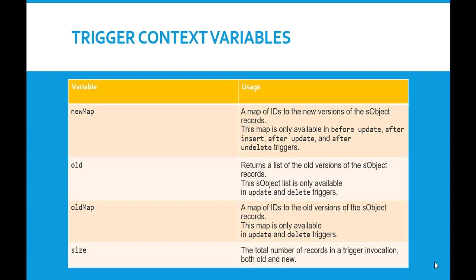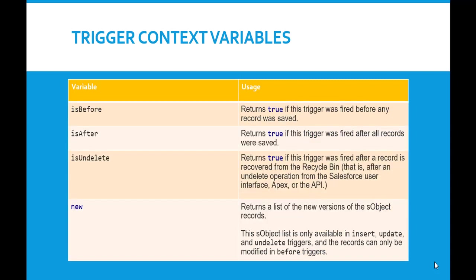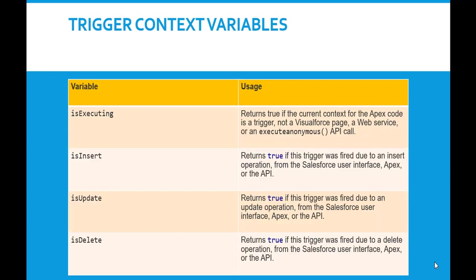To summarize, the trigger context variables are: new, newMap, old, oldMap, size, isBefore, isAfter, isUndelete, isExecuting, isInsert, isUpdate, and isDelete. These are the different context variables available, along with their usage. In the next tutorial, we will do some examples on triggers to make everything crystal clear. Thank you so much.